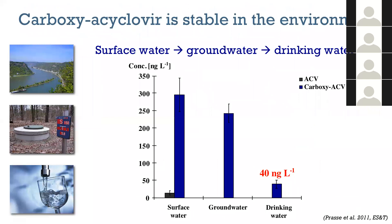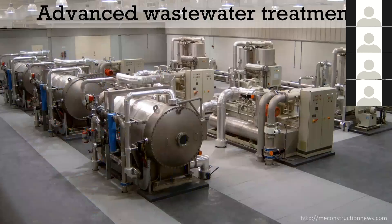To give a better sense of why we care about this for both the environment and human exposure: we did a study looking into a transect from surface water to groundwater to drinking water. The key take-home message is that while acyclovir was detectable at low concentrations in surface water, it wasn't present in groundwater or drinking water. But carboxyacyclovir — the transformation product — could be detected in drinking water at a concentration of 40 nanograms per liter, showing this compound is really persistent and represents a human exposure via drinking water.